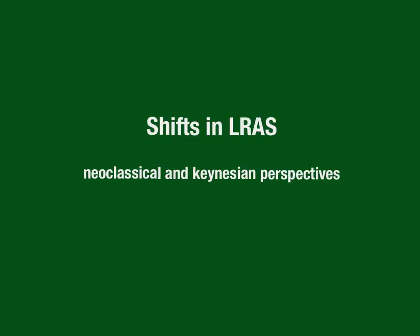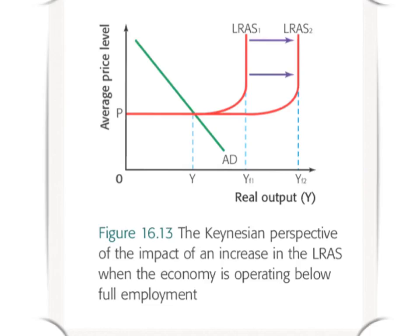This represents an increase in the potential output of the country. A country seeking to increase the rate of economic growth and the full employment level of real output will use supply-side policies to increase the quantity or improve the quality of its factors of production. We're on the supply side here, and the impact depends on the way in which you view economics. For Keynesian economists, the impact on the long-range aggregate supply curve — really on the equilibrium point of output and price level — is dependent on where the aggregate demand curve is.